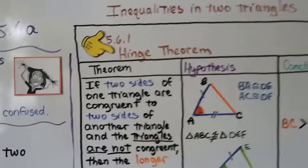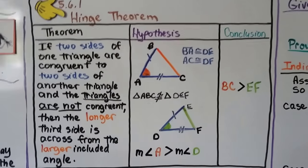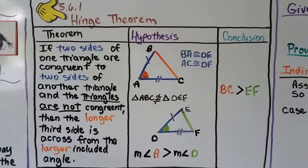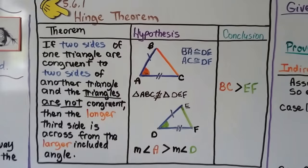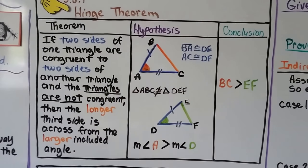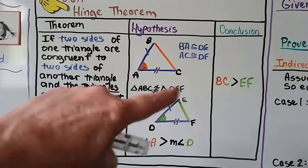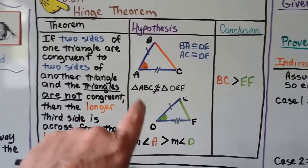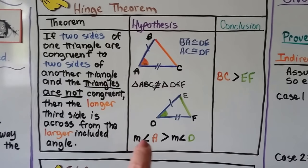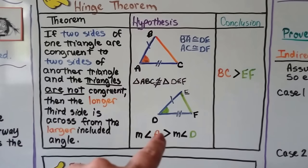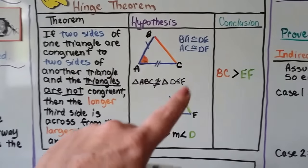Here's the Hinge Theorem — inequalities in two triangles. It says: if two sides of one triangle are congruent to two sides of another triangle and the triangles are not congruent, then the longer third side is across from the larger included angle. So BA is congruent to DE and AC is congruent to DF, and triangle ABC is not congruent to triangle DEF. The measure of angle A is greater than the measure of angle D, so BC is greater than EF.